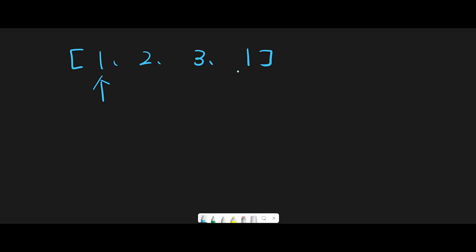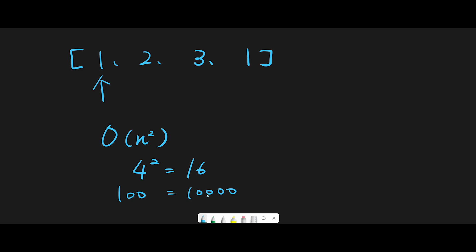So we should return true in this case. But the problem is the time complexity of a nested loop is O(n²), where n is the number of elements in the input array. In this case, 4² = 16, so there's a possibility we iterate up to 16 times. But if we have 100 numbers, there's a possibility we iterate up to 10,000 times. That's why O(n²) is not a good algorithm.